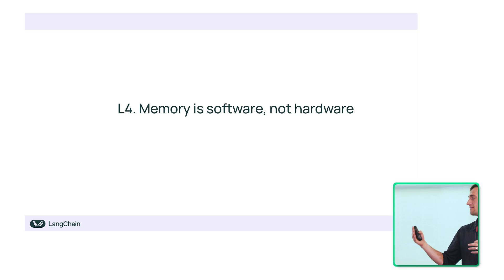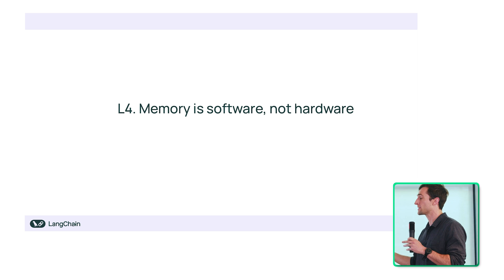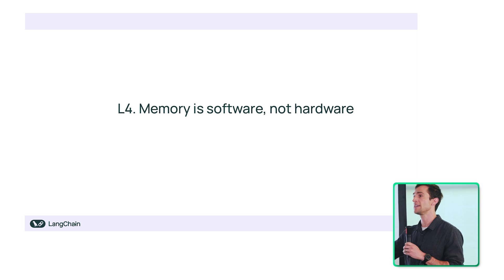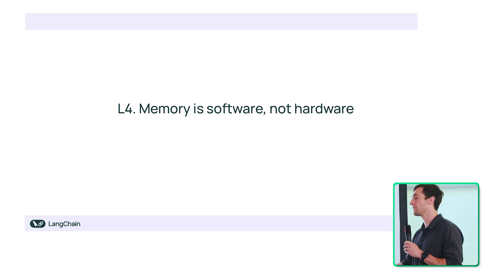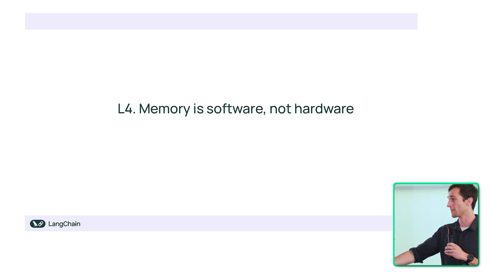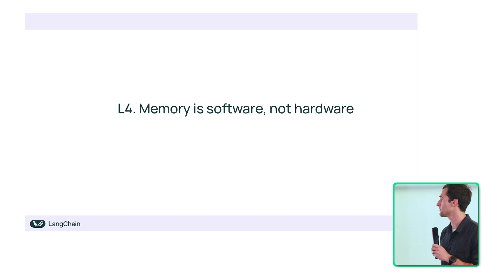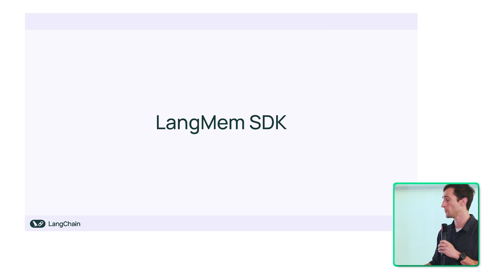Lesson four is that memory is software, not necessarily hardware. We often have people come to us saying they need a GraphDB or a very particular instantiation of memory. When really it's backwards — you need to start from what you're trying to solve. We sort of made this mistake in that we had a very particular memory server with a particular instance. We got great feedback on that, but found it wasn't sufficiently flexible for people depending on the deployment context.